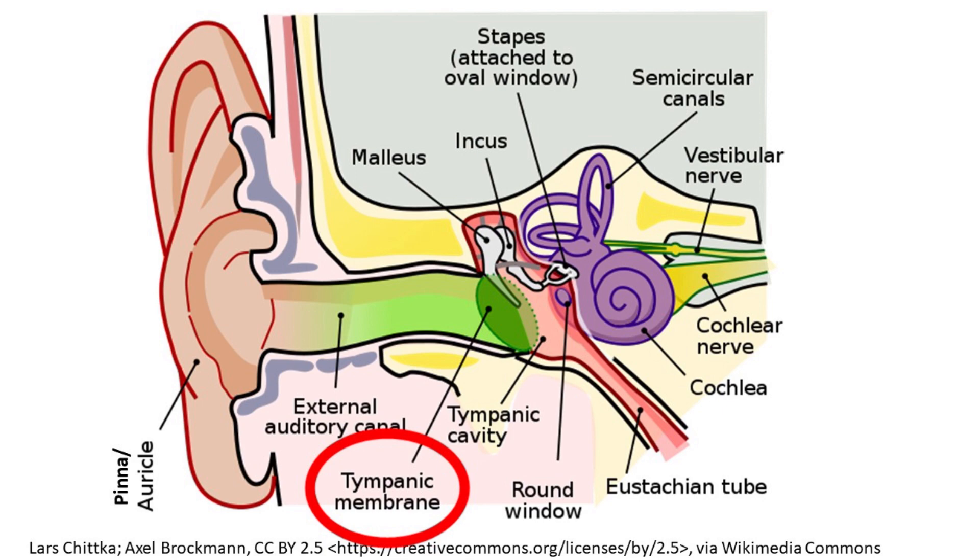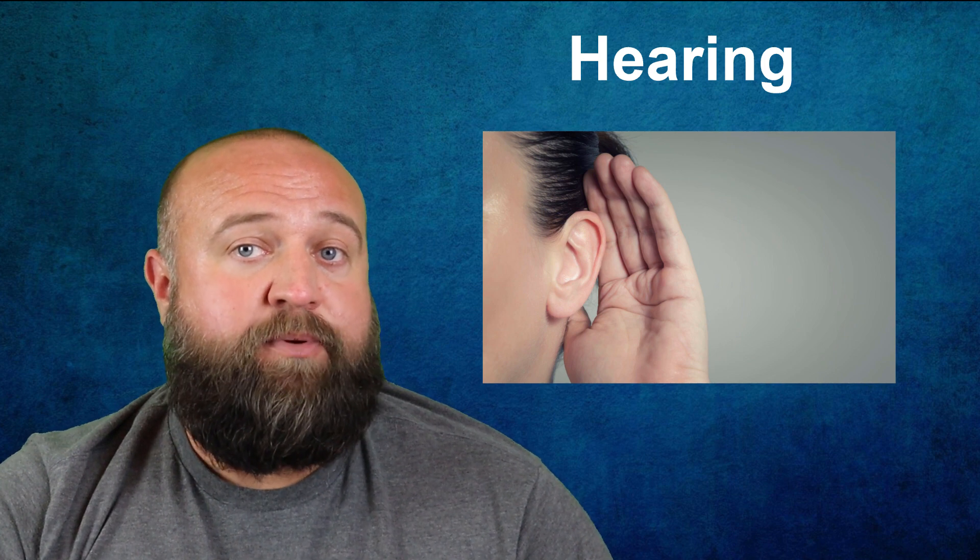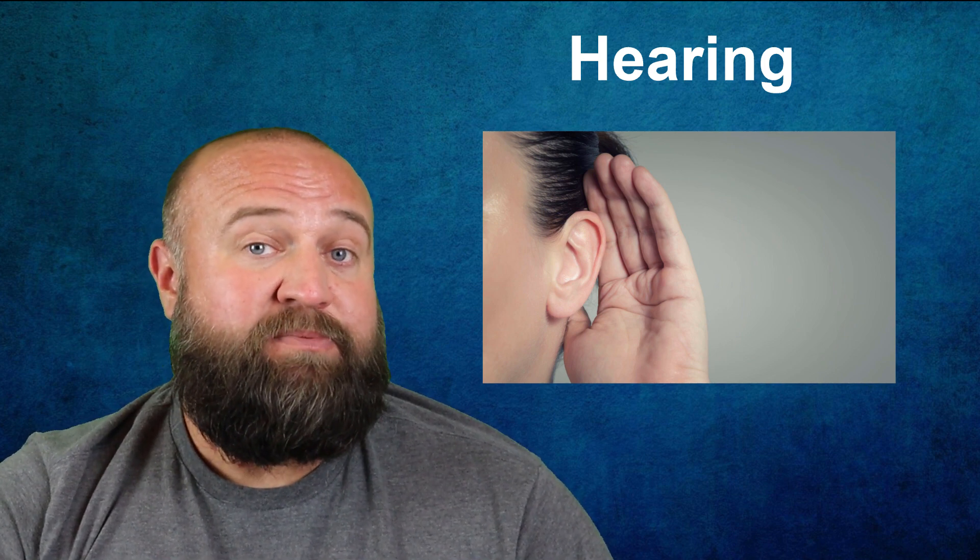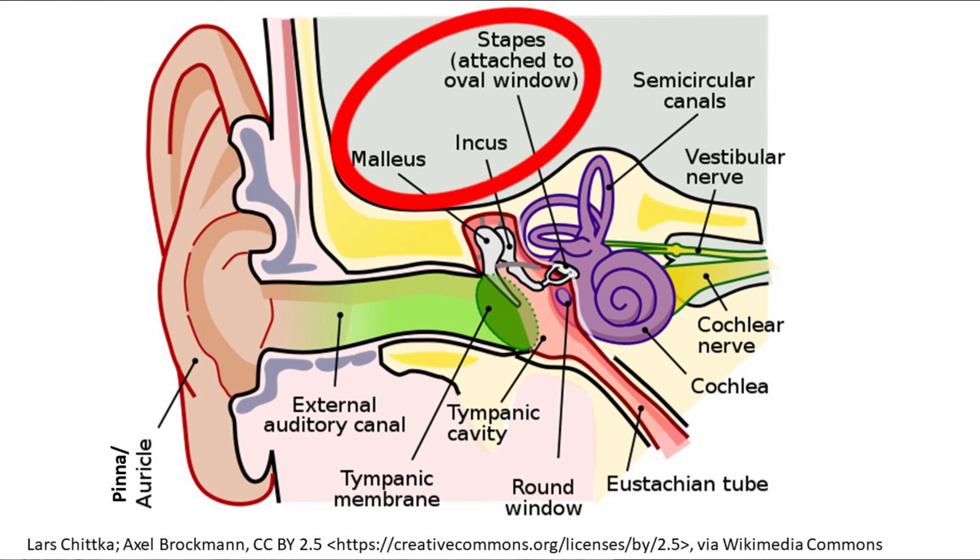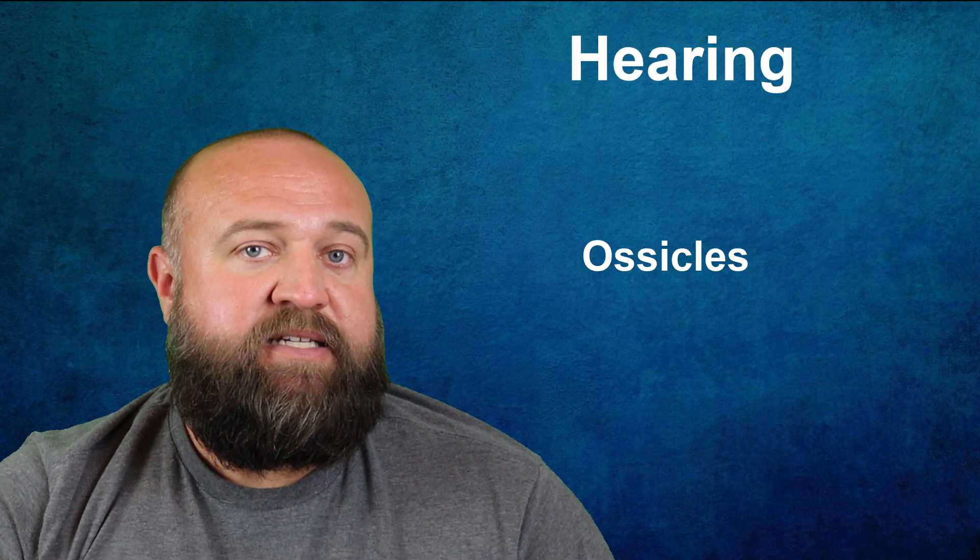Located behind the eardrum is the middle ear, which is composed mostly of three very tiny bones, which are actually the smallest bones in the human body. These bones are called the malleus, the incus, and the stapes. Together, they're usually referred to as the ossicles. They connect to the inner ear.